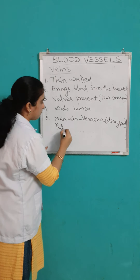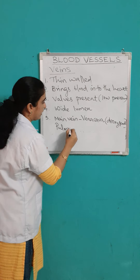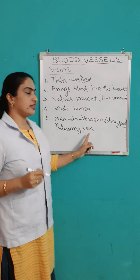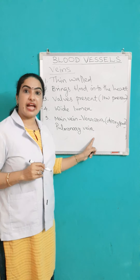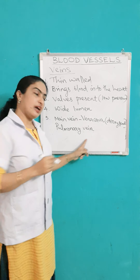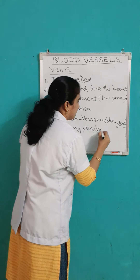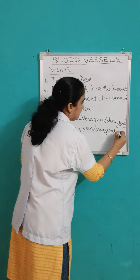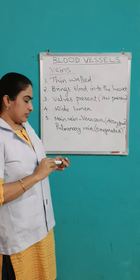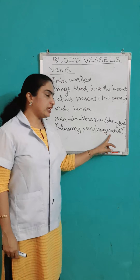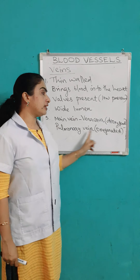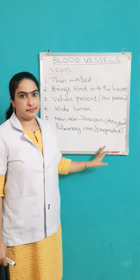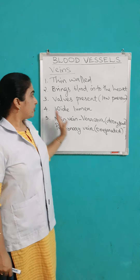There is an exception in case of veins also — that exception is the pulmonary vein. The pulmonary vein carries oxygenated blood. The oxygenated blood is carried by the pulmonary vein from the lungs to the heart. That is the difference.